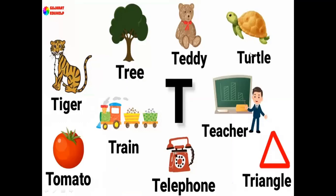T for turtle, t-turtle. T is for teacher, teacher. T is for train, t-train. And T is for telephone, t-telephone. And which shape is this? Yes, t-triangle, t-triangle.